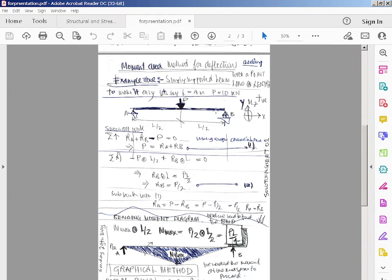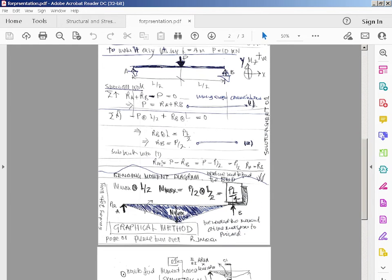It's a simply supported beam with a point load. You do equilibrium: vertical RA plus RB minus P equals zero. Then take moments about A: minus P times L over 2 plus RB times L equals 0, so RB equals P over 2. Substitute that back into equation 1 and RA equals P over 2 as well. So RA equals RB equals P over 2.